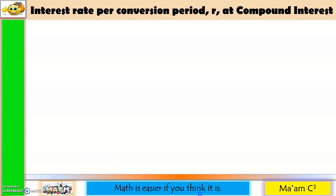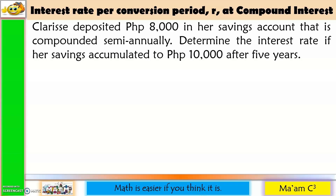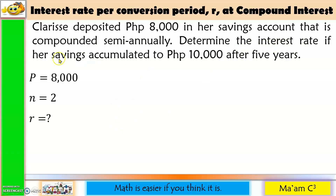Now let us talk about the interest rate per conversion period at compound interest. Clarice deposited 8,000 pesos in her savings account compounded semi-annually. We need to determine the interest rate if her savings accumulated to 10,000 pesos after 5 years. So P is 8,000, N is 2, F is 10,000, and T is 5.